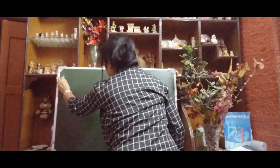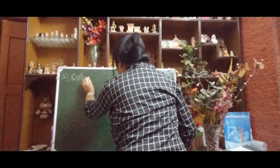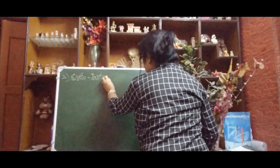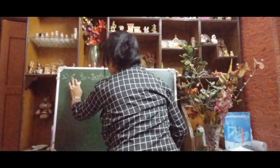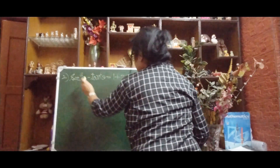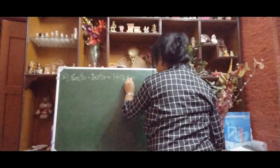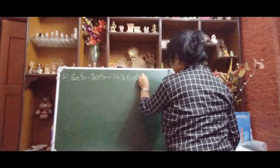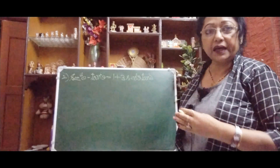Number two — please see this one very carefully. sin⁶θ − tan⁶θ equals 1 + 3sin²θ·tan²θ. Note that the power is 6. This is our left hand side and this is our right hand side.